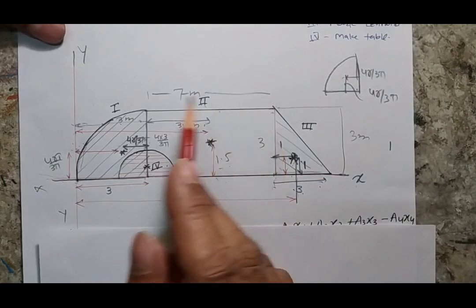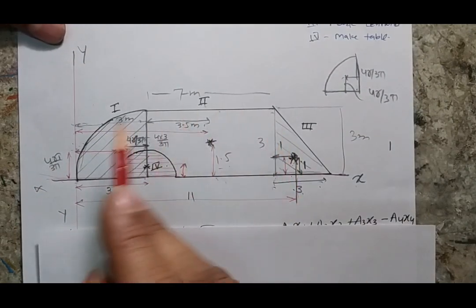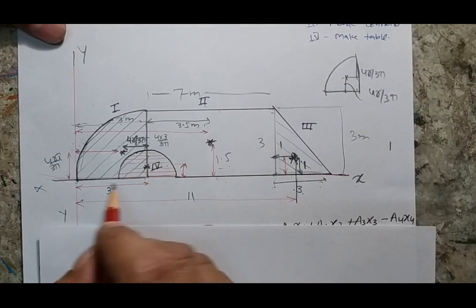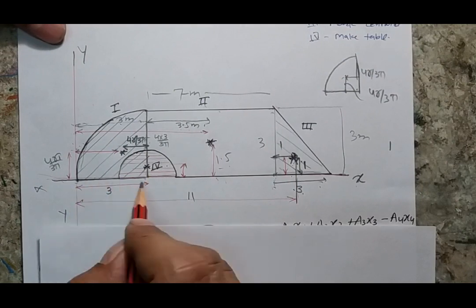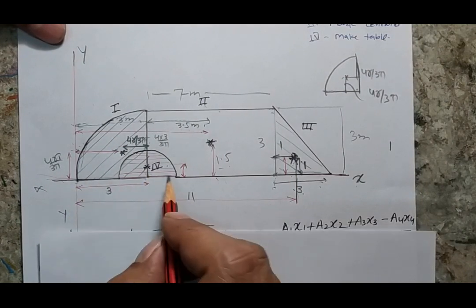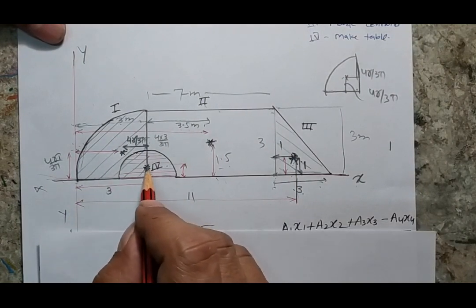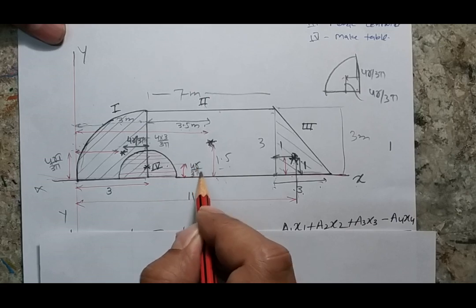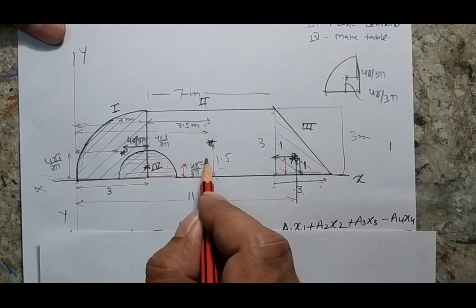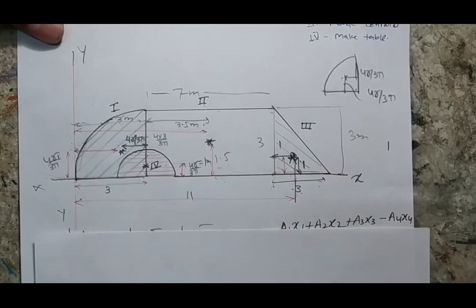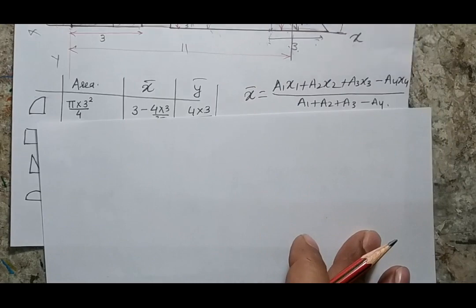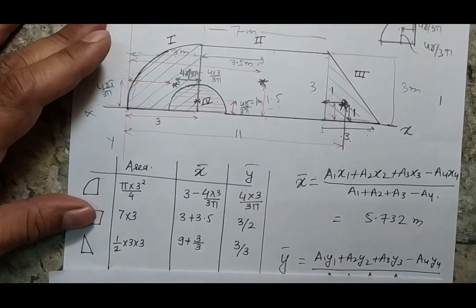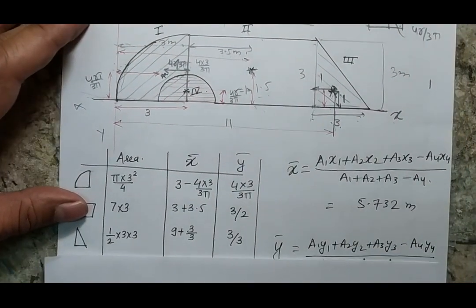Once I mark the centroid of all known sections, for the semicircular arc its x-position will be at 3 and its y-position will be 4R/3π where R is given as 1 meter. Now once I complete this figure, my next job is to write the table.